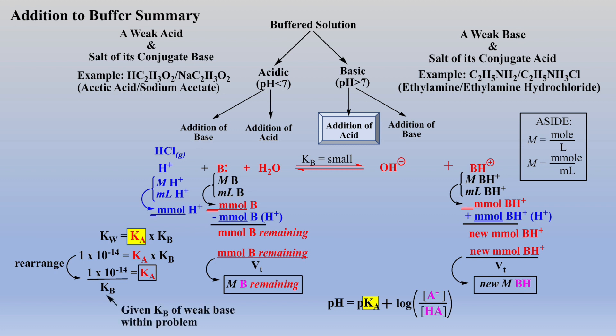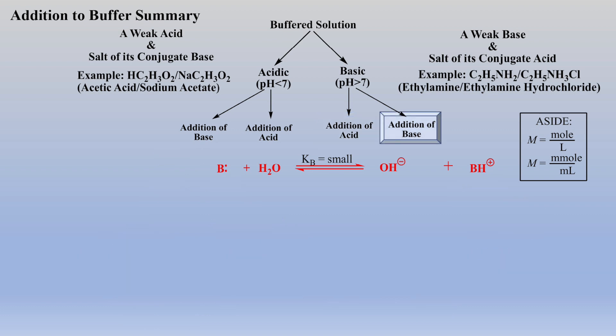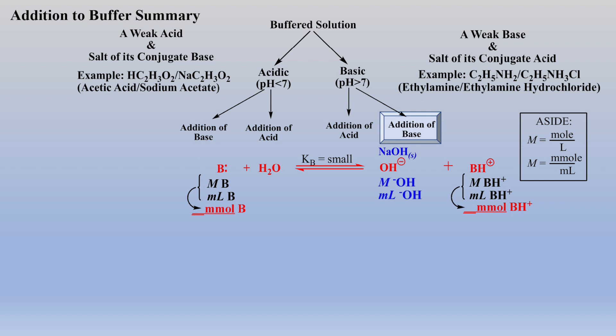Substituting the Ka value into the Henderson-Hasselbalch equation then allows the final pH to be calculated. Now let's add some base to our basic buffered solution. We need to first convert the given molarities and quantity of basic buffered solution to millimoles. The base can either be added in the form of a solid base such as sodium hydroxide, which will assume no change in the total volume of the solution, or the base can be added via a solution of known molarity and quantity. Either way, you need to convert this amount to millimoles.